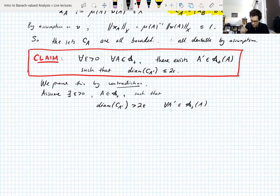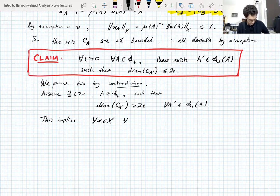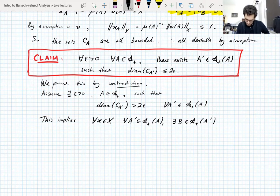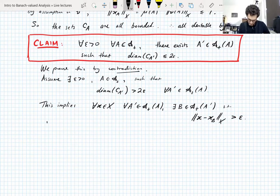This assumption implies that for all x in X and for all A' contained in A, there exists a set B contained in A' such that ‖x − x_B‖ is greater than ε. If this were not true, there would exist x̃ in X and A' such that ‖x̃ − x_B‖ ≤ ε for all B contained in A'. Then by the triangle inequality, ‖x_{B'} − x_B‖ ≤ 2ε for all B, B' ⊆ A', which would imply diam(C_{A'}) ≤ 2ε — contradicting our assumption.